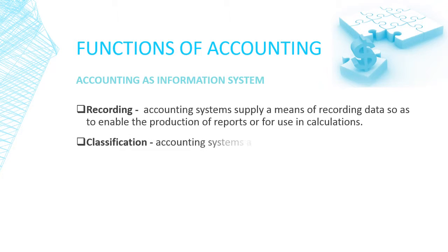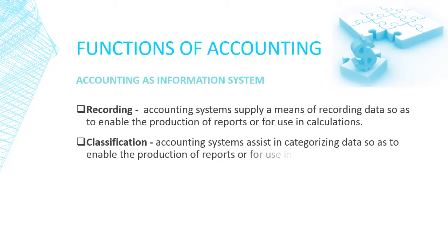Classification. Accounting systems assist in categorizing data so as to enable the production of reports or for use in calculations. For example, identifying whether an item is an asset or an expense, or which costs should be included in inventory.